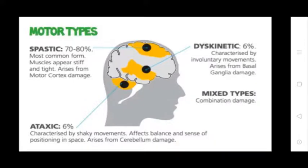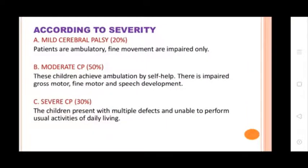According to severity classification: Mild CP — 20%, patient is ambulatory, fine movements are impaired only. Moderate CP — 50%, children achieve ambulation with self-help; there is impaired gross motor, fine motor, and speech involvement. Severe CP — 30%, children present multiple defects and are unable to perform usual activities of daily living.